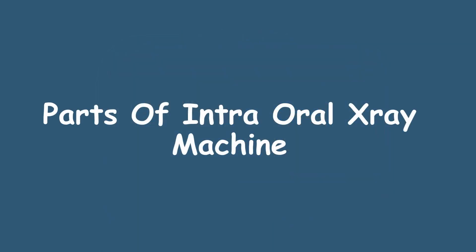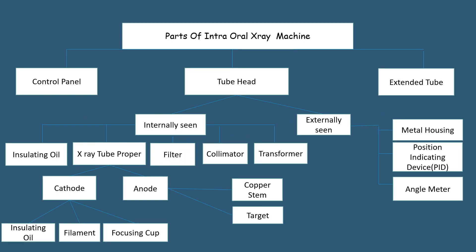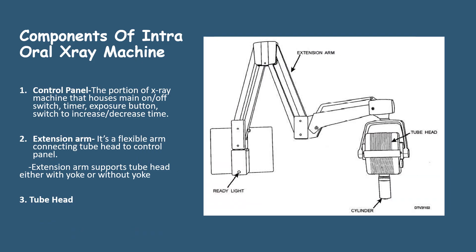In today's video, we will be discussing the parts of an intraoral x-ray machine. Let's have a look at a summarized version of the parts of an intraoral x-ray machine. The components include the control panel, the extension arm, and the tube head.